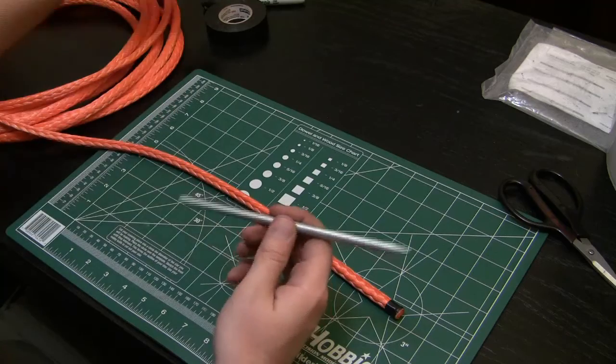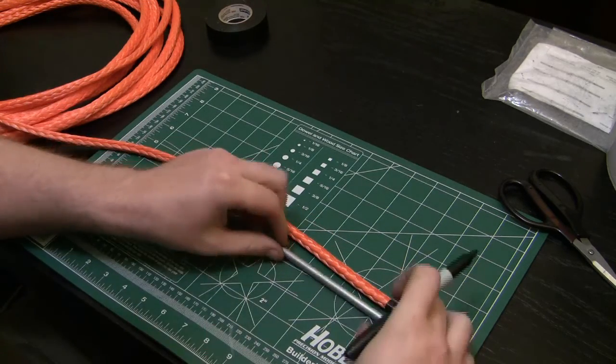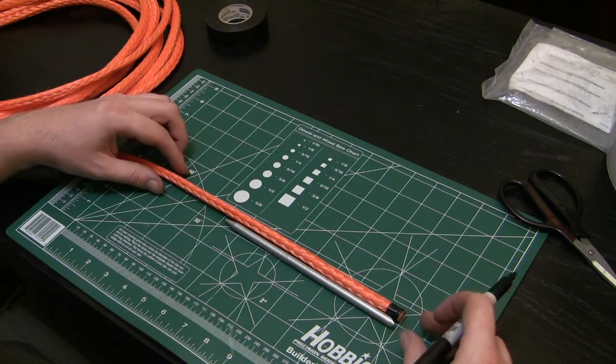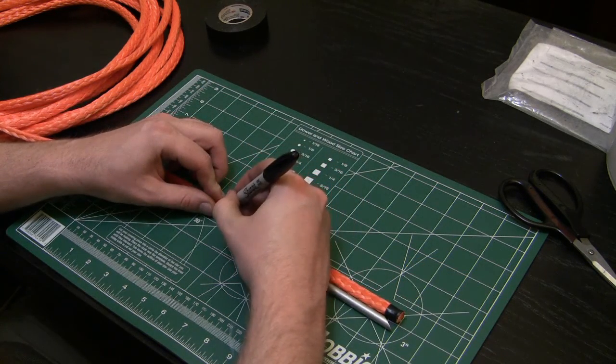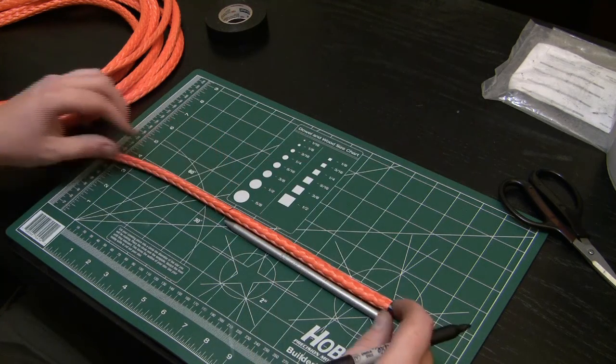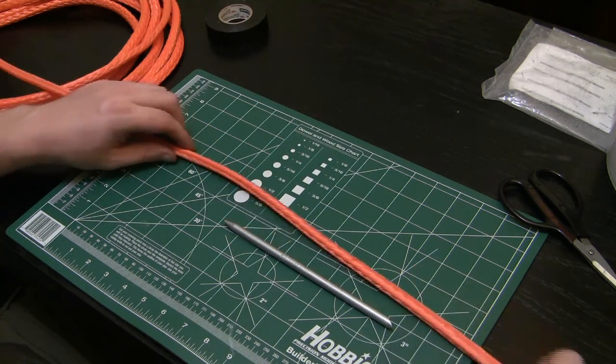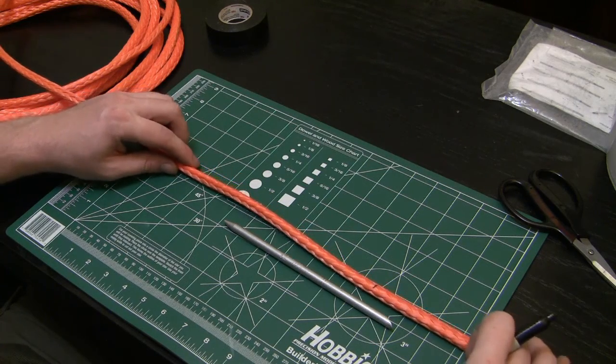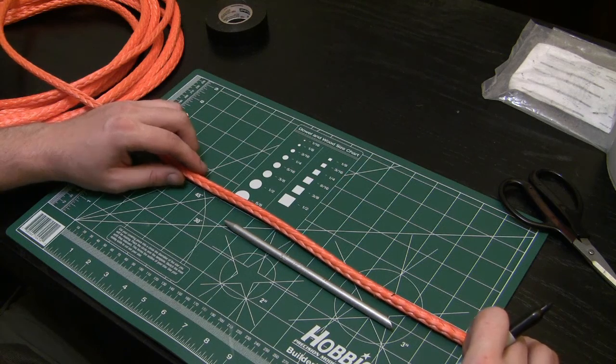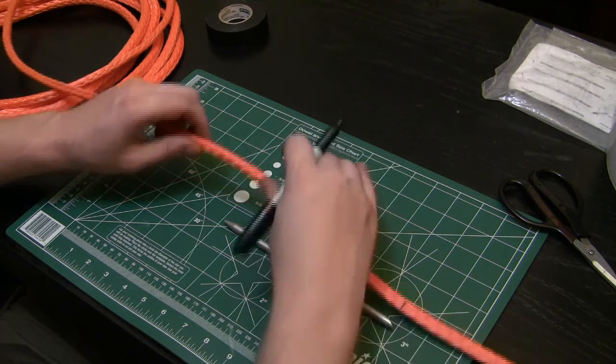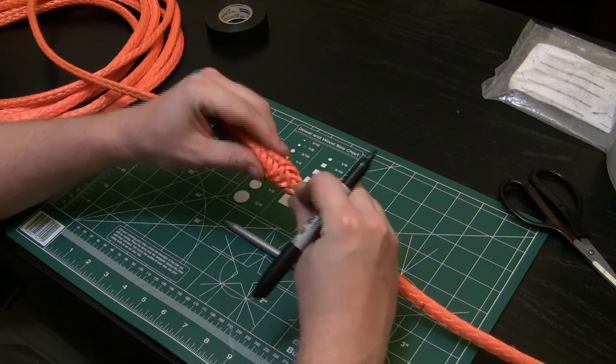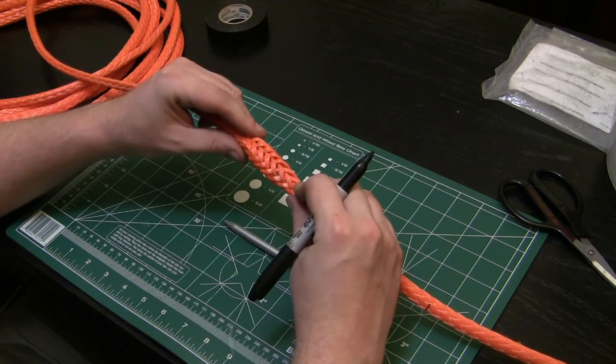First thing you want to do is take your fid and your marker and measure out one fid length and make a mark. This is mark one, so I put one dash. What we're doing here is we're making the berry or the tail section that's going to go inside the rest of the rope.